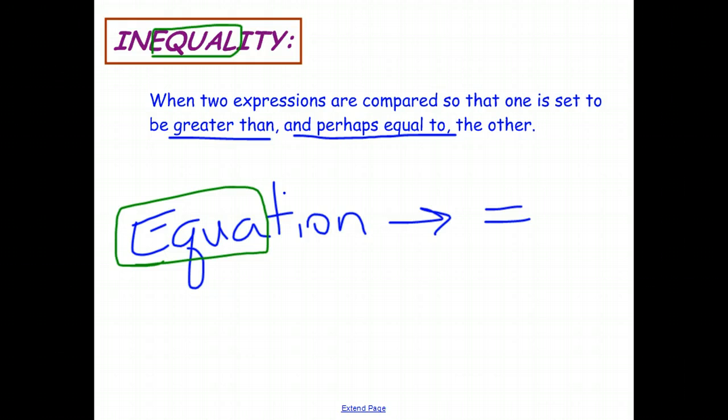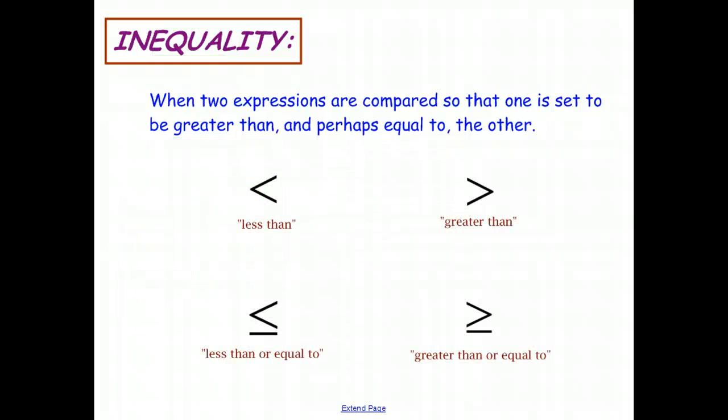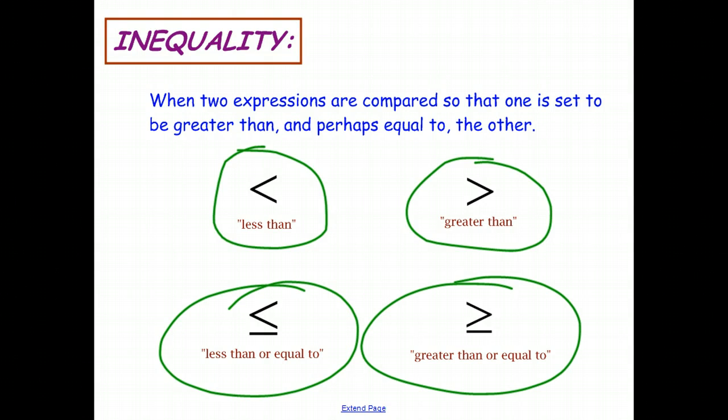And to talk about inequalities, we have four different signs. We have a less than sign, a greater than, and then these two are really the primary two signs that we use. If we want to include a number that could be equal to or greater than or equal to, we add the equal bar underneath.